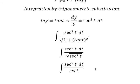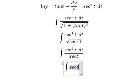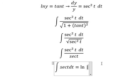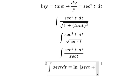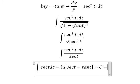We then simplify the numerator and denominator. The integration gives us ln of the absolute value of secant t plus tan t, plus C.